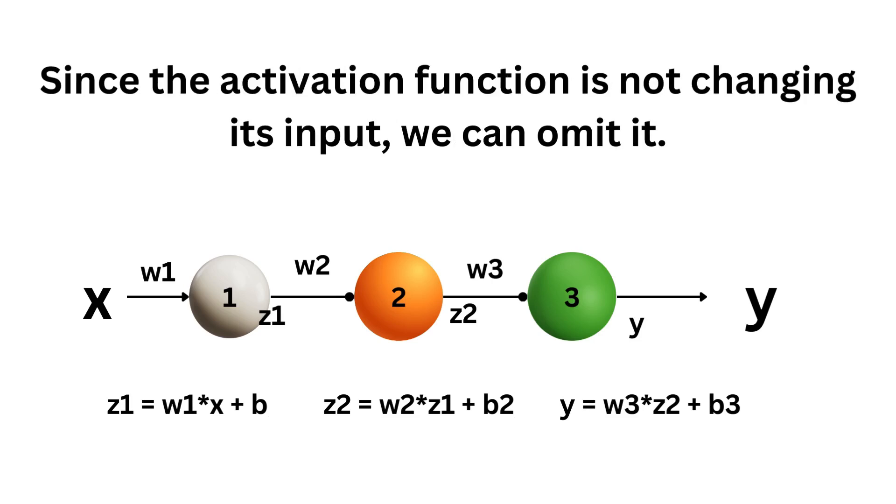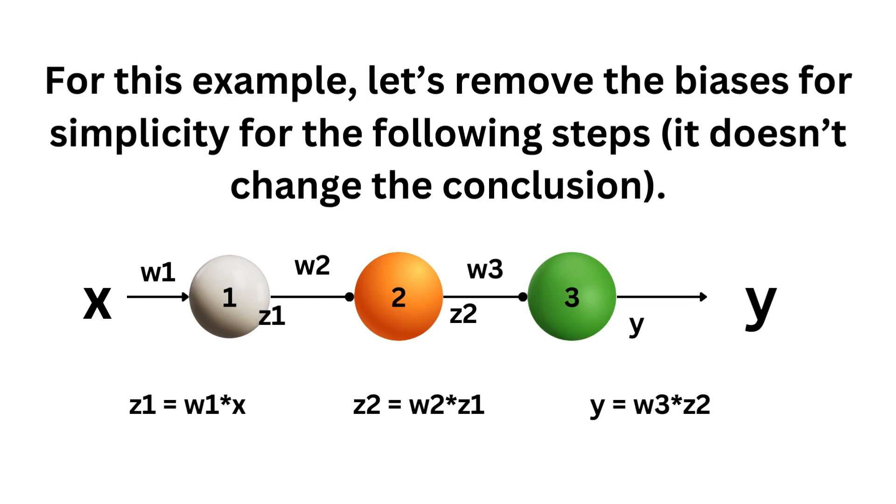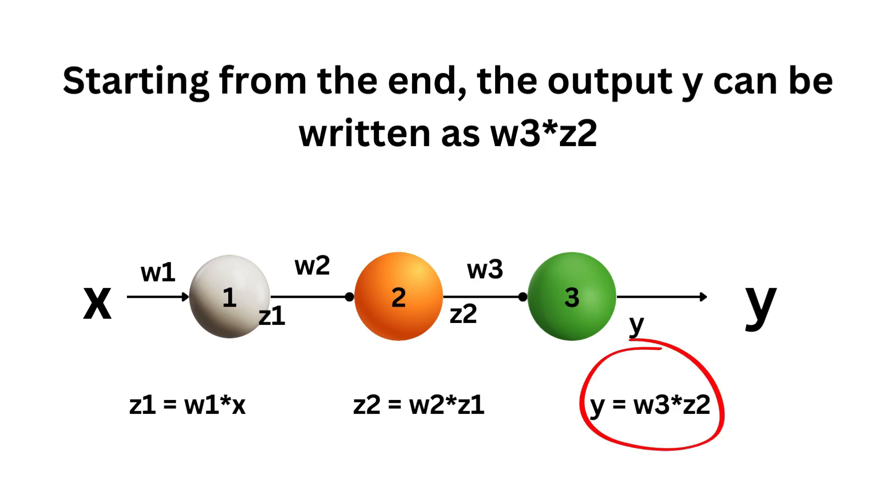Now, since the activation function is not changing its input, we can just omit it. And for this example, let's remove the biases for simplicity for the following steps. It doesn't change the conclusion at all. So, starting from the end, the output y can be written as y equals w3 times z2.